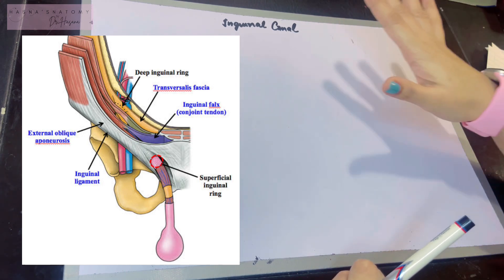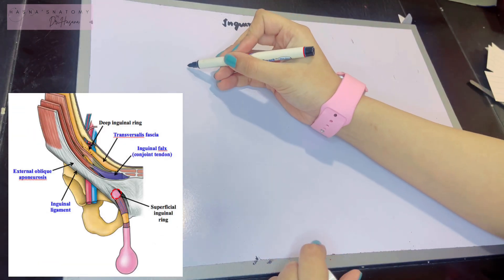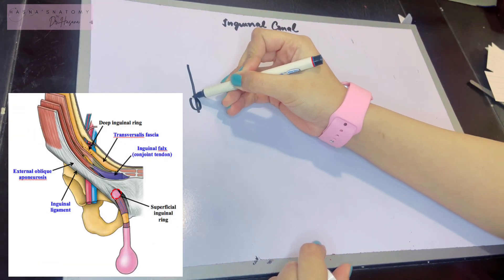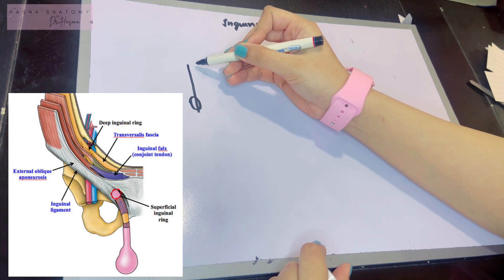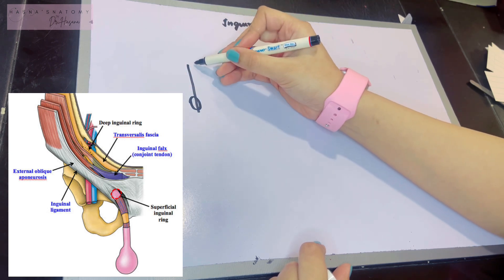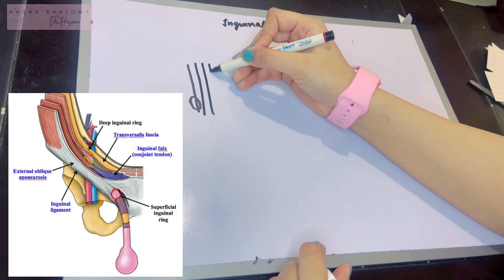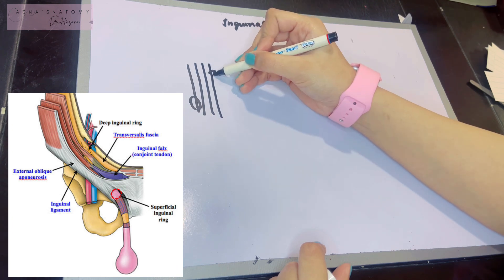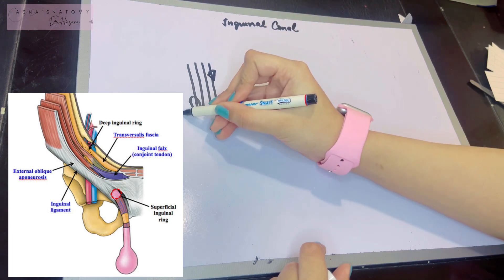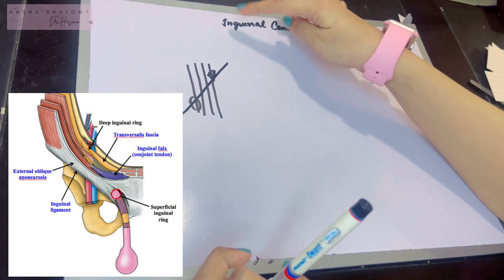The fascia transversalis is where the deep inguinal ring was located. Going from deep to superficial, the next layer was the transversus abdominis, then the internal oblique, then the external oblique. The superficial inguinal ring was located in the external oblique, and that is how your structures pass through this canal.